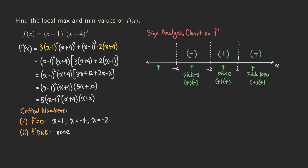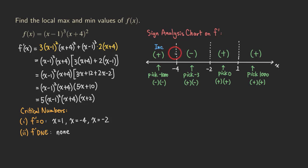For the last interval, to the left of negative four, we pick negative 1000. Negative 1000 plus four is negative, and negative 1000 plus two is also negative. Two negative numbers multiplied together give a positive result. So the function is increasing on the leftmost interval, then decreasing, then increasing, and also increasing — so the function is increasing here and increasing here.